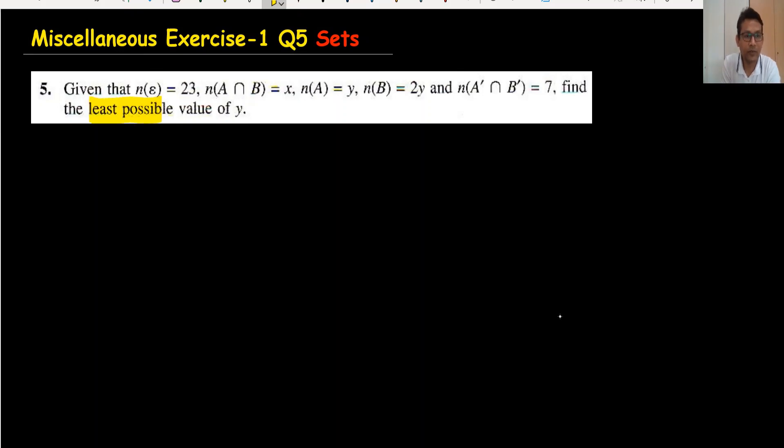Finding the least possible value of y when we have two variables is not easy, but we have a technique using two variables. This is question number five from the miscellaneous exercise in the Additional Mathematics book. If you think this video is useful, please continue watching.